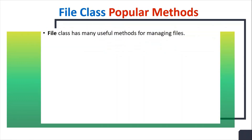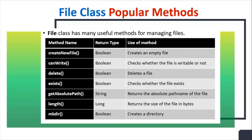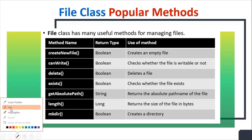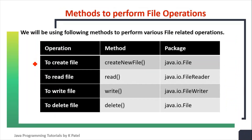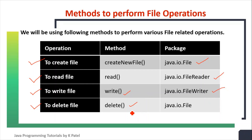There are many popular methods under the File class available to manage files. For example, to create a new file we can use the createNewFile() method; to delete a file we may use the delete() method. In this tutorial we will be using four methods: createNewFile() to create a file, read() from FileReader class to read data, write() from FileWriter class to write data, and delete() from File class to delete a file. All these classes — File, FileWriter, and FileReader — are available under the java.io package.